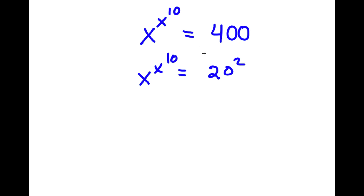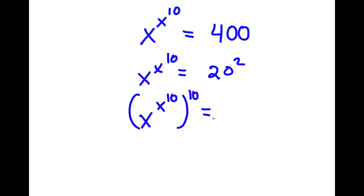And now I'm going to take the power of 10 on both sides. So now I have x to the power of x to the power of 10, to the power of 10, is equal to 20 to the power of 2 to the power of 10.